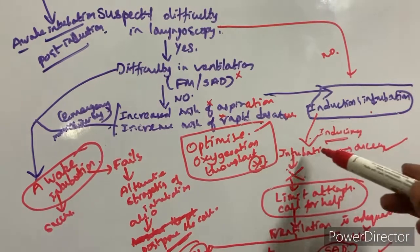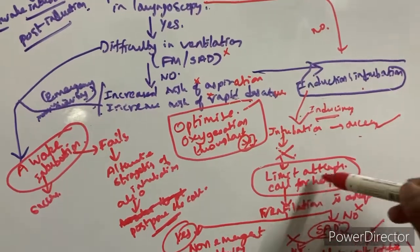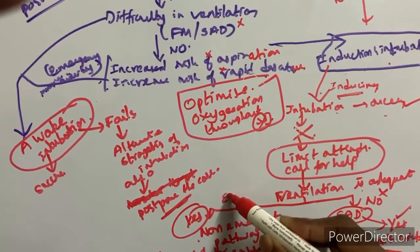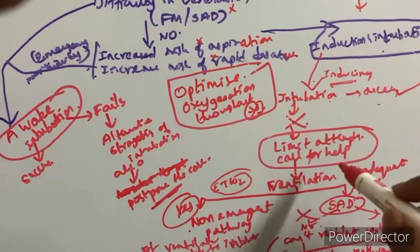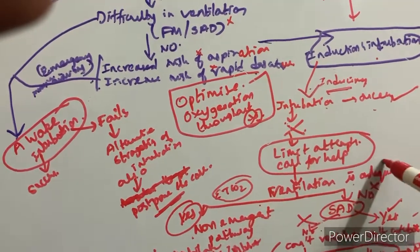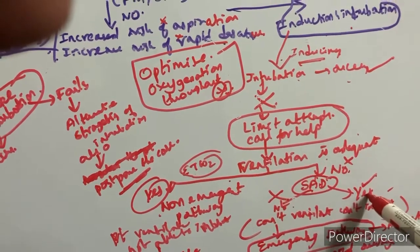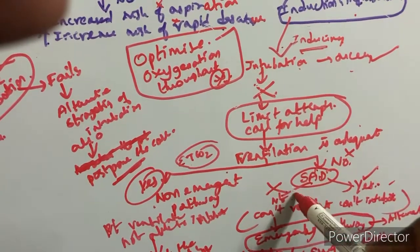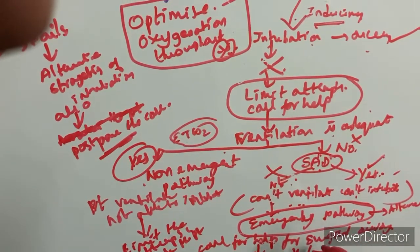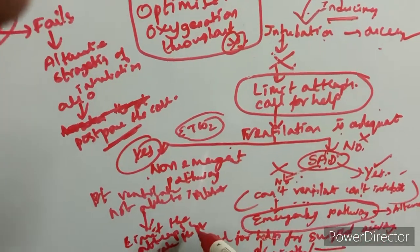With induction, attempt intubation. If successful, proceed. If it fails, limit attempts, call for help, and maintain ventilation using face mask — you can assess ventilation adequacy with EtCO2. If ventilation is adequate, proceed to the non-emergent pathway (limit attempts, awaken patient). If ventilation is inadequate, use supraglottic airway device. If that also fails — can't ventilate, can't intubate — go for the emergency pathway: call for help for surgical access, needle cricothyroidotomy, or surgical tracheostomy.